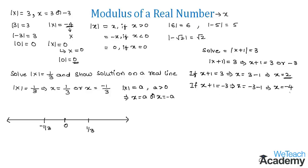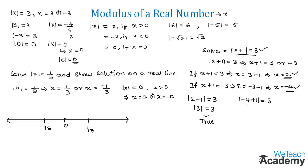Let us verify both solutions by substituting into the equation. Substituting x equals two: mod(2 plus 1) equals mod 3 equals 3, so LHS equals RHS — this is a true solution. Substituting x equals minus four: mod(minus 4 plus 1) equals mod(minus 3) equals 3, so this is also a true solution.